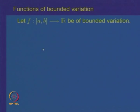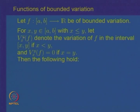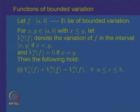Let f be a function of bounded variation. For any two points x and y in [a,b] with x ≤ y, let V(x,y) denote the variation of f over [x,y] (and set V(x,x) = 0). The first property is that the variation is additive: the variation of f over [a,b] equals the variation over [a,c] plus the variation over [c,b], for any c in [a,b].